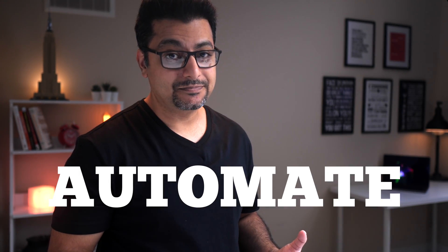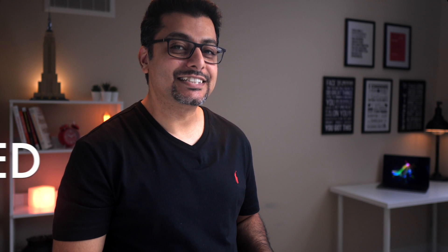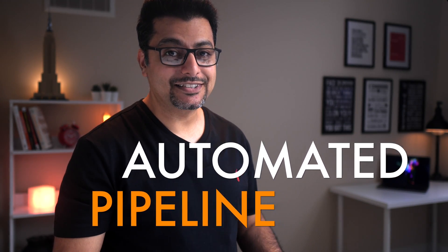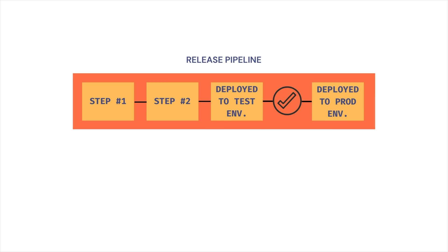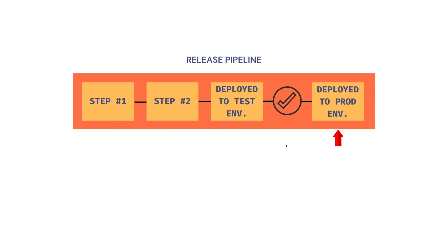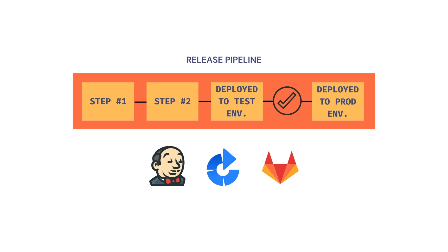Now that we know the problems with the typical deployment process, let's see how they can be resolved. The main problem is that the process is manual, so to fix it we need to automate it. We do that by creating an automated pipeline — a release pipeline. Just like a build pipeline, a release pipeline is a sequence of operations to perform the deployment. The steps the operations team receives as instructions are automated using the same tools that helped with continuous integration, like Jenkins, Bamboo, and GitLab.